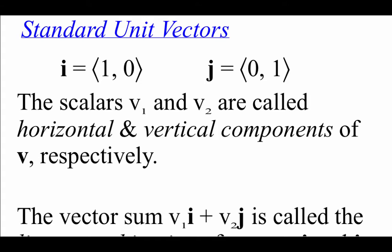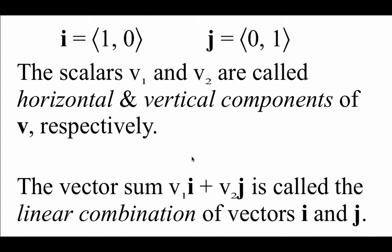There are two standard unit vectors: the i vector, which is 1, 0, and the j vector, which is 0, 1. Any other vector can be written as a linear combination of these two vectors. We've got scalars v1 and v2, called the horizontal and vertical components of our vector v. What we do is take our v1 horizontal component times vector i, plus our v2 vertical component times vector j. When we add those things together, it's called a linear combination of vectors i and j.